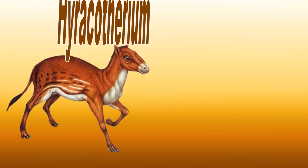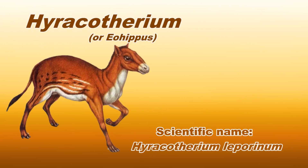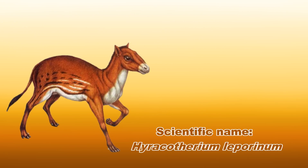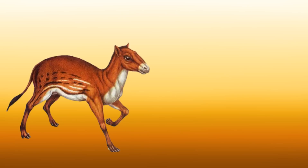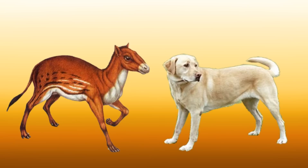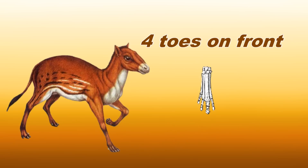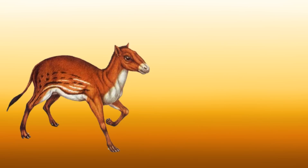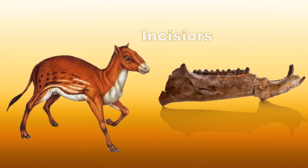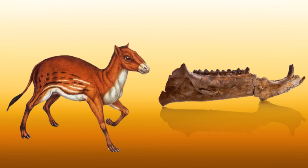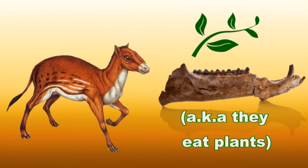I'm going to cover the evolution of the horse. The horse's earliest ancestor is the hierocotherium, or eohippus, which means dawn horse. They lived 55 million years ago and were about the size of a dog. They had four toes on each front foot and three on their back feet. Their jaws had incisors, cuspids, which are fangs, molars, and premolars — the typical teeth of an omnivorous organism.